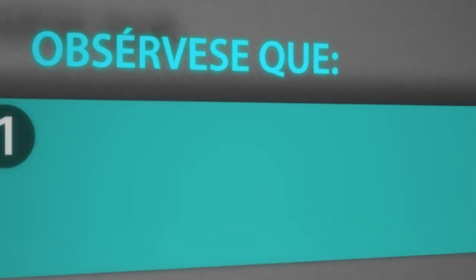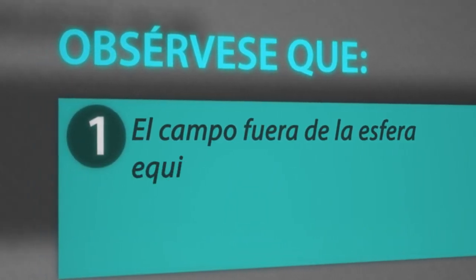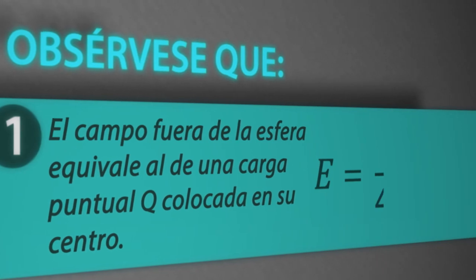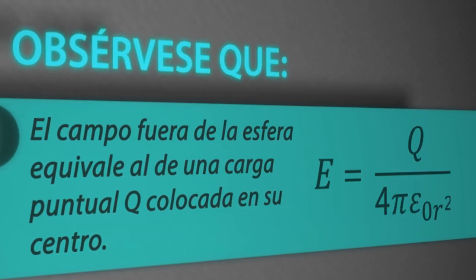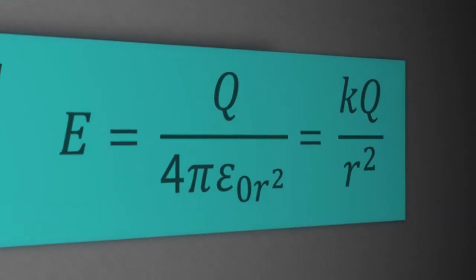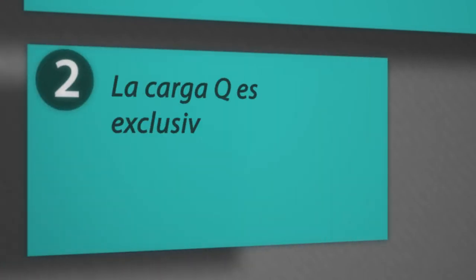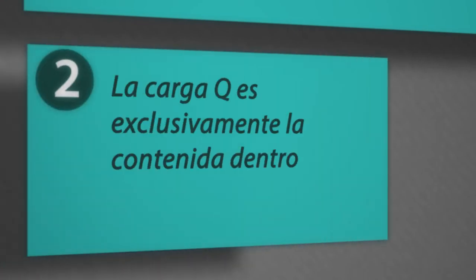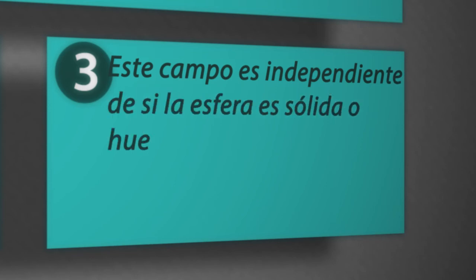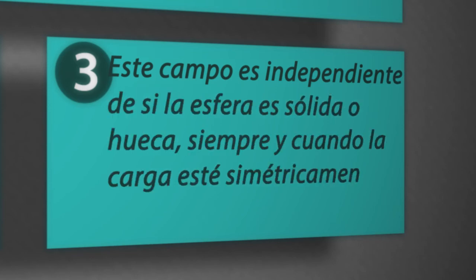El campo fuera de la esfera equivale al de una carga puntual Q colocada en su centro, es decir, E es igual a Q entre 4π·epsilon₀·R², o de otra forma, K·Q entre R². La carga Q es exclusivamente la contenida dentro de la superficie gaussiana. Este campo es independiente de si la esfera es sólida o hueca, siempre y cuando la carga esté simétricamente distribuida.